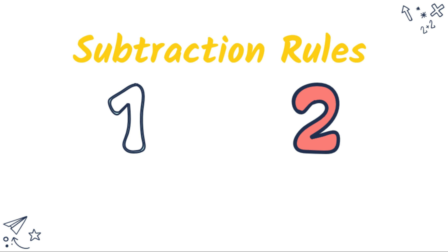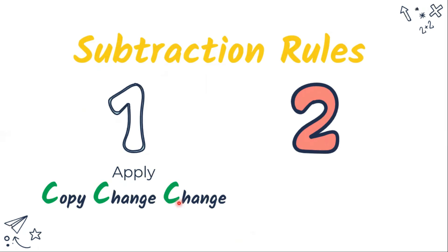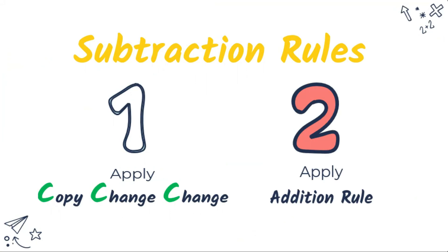For the subtraction rules, we have two steps. First, apply copy-change-change: copy the first number, change the subtraction sign to addition sign, and change the second number to its opposite sign. Second, apply the addition rule.